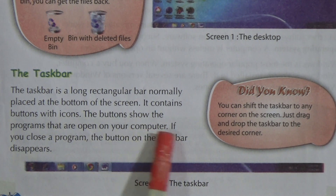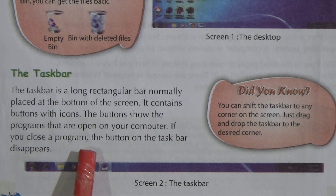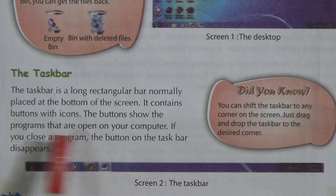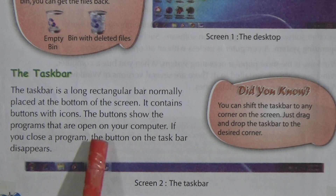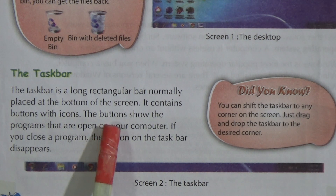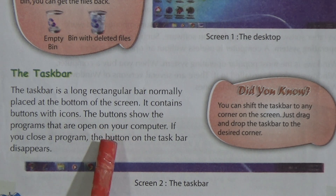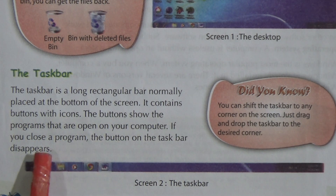If you close a program, the button on the taskbar disappears. So when you open a program, its icon shows as a button on the taskbar, and when you close a program, the button disappears.